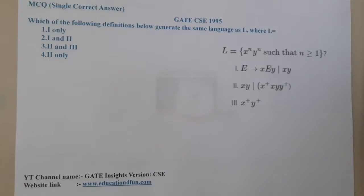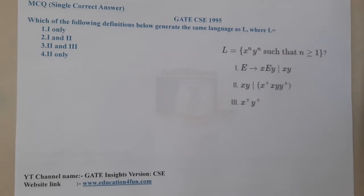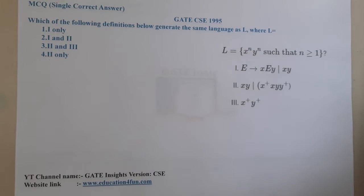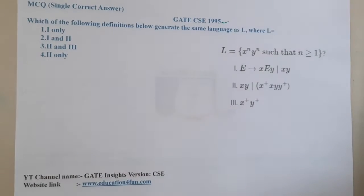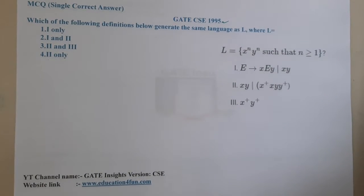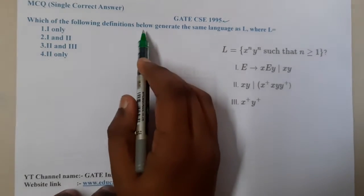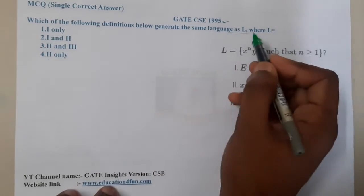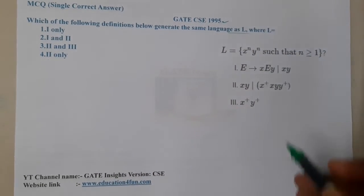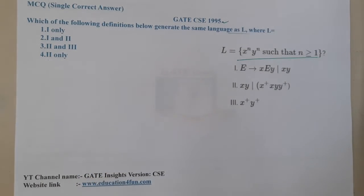Hello guys, we are back with our next lecture. In this lecture let us go through the next question. This question belongs to GATE CSE 1995. The given question is: which of the following definitions below generates the same language as L? They give language L in this way.